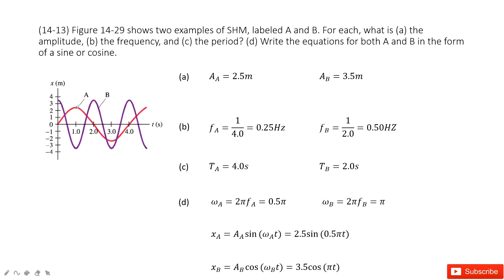Then frequency for A. We first find the period for A is 4 seconds, right. From this point to this point, 4 seconds. And then frequency is 1 over period. So it becomes 1 over 4, 0.25 Hertz.